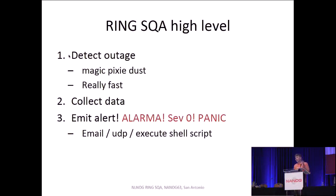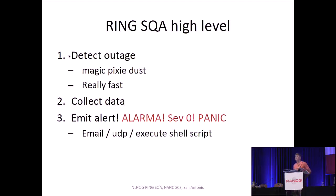The process is simple. Ring SQA detects an issue and collects data for your immediate consumption, so you have actual debugging information from when the issue was occurring — not a traceroute that's hours after the event, but traceroutes during the event. An alarm is then emitted through various output plugins: you can receive it via email, a UDP packet containing the debugging information, or you can launch a shell script that does API calls or opens a ticket.